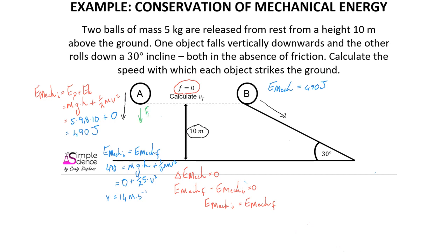This makes sense and we could also verify it using an equation of motion. We know there is only one force acting on this object, so F_net equals m times a, where F_net equals F_g. We can calculate the acceleration of this object to find that it is g, at 9.8 meters per second squared.